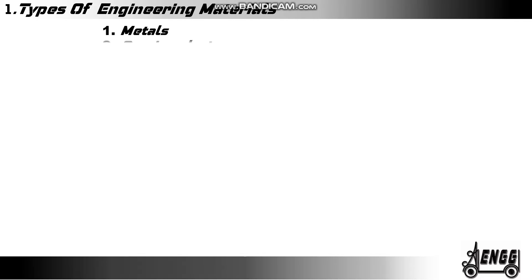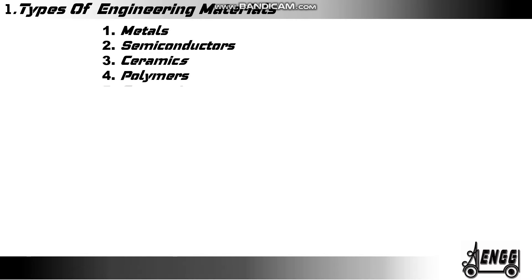Types of engineering materials. There are five types of engineering materials, mainly metals, semiconductors, ceramics, polymers and composites.